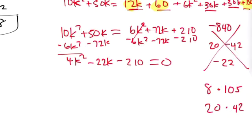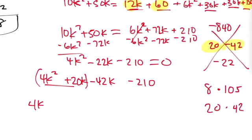So factor by grouping. 4k squared, and then negative 210 is the same. Factor by grouping center. So we got plus 20k minus 42k. Okay, and factor by grouping there by 4. Factor out a 4k. Factor out a 4k, you get k plus 5.